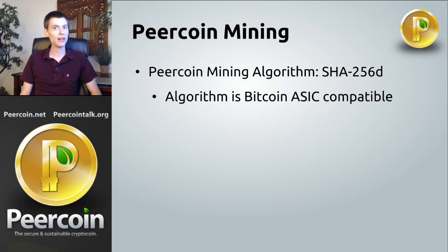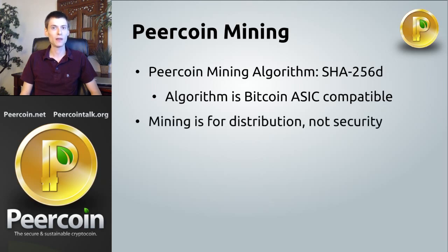But that's where the similarity ends. Let's look at some differences now. The first difference is the purpose of the mining. Bitcoin, as you probably know, is a proof-of-work network, which means the miners are used to secure the network and confirm the transactions on the network. Pure Coin does not rely on its miners for security — it's a proof-of-stake network. So the mining is just used to distribute the coins in a fair manner.